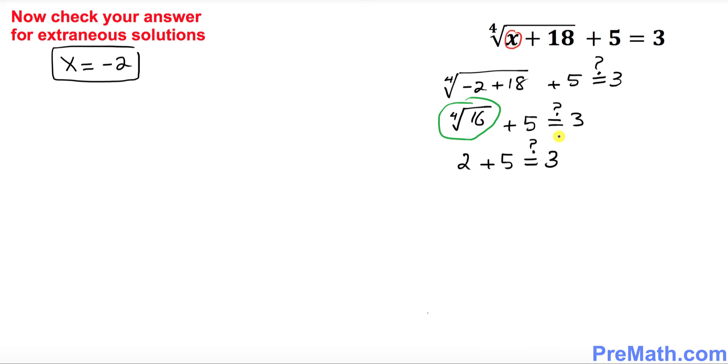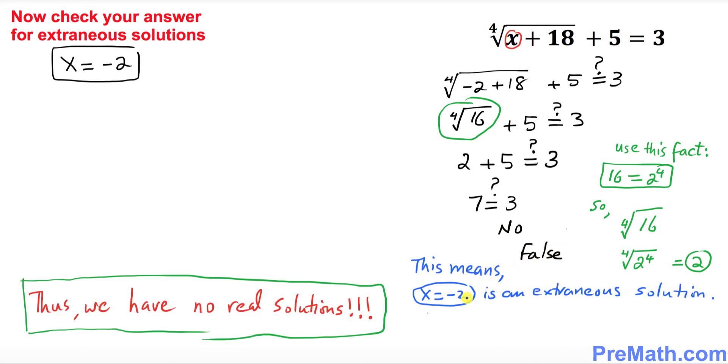By the way, this is the fact we used: the fourth root of 16 equals 2. So finally, 2 plus 5 is 7 on the left side and 3 on the right side. Are they the same? No, this statement is false. This means x equals negative 2 is an extraneous solution, so we don't have any real solution. Thanks for watching, and please subscribe for more videos.